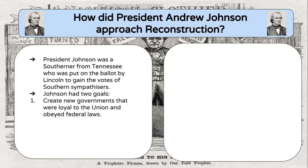Congress created the Freedmen's Bureau, set up in March of 1865 — even before Lincoln died in April — to help former slaves. Most of the slaves had never been educated and had never been free before. You can't just set somebody free at 30 or 40 years old and say 'go figure it out.' They needed support and structure, and the Freedmen's Bureau provided that.